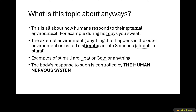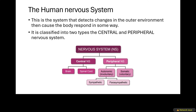The body's response to such stimuli is controlled by the human nervous system, which is what we're going to be learning about in this episode. The human nervous system first detects changes in the outer environment, then it causes the body to respond in some way. For example, when it is very hot, the nervous system detects that heat and your body reacts by sweating.